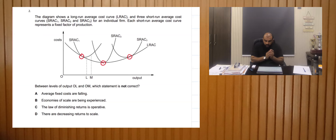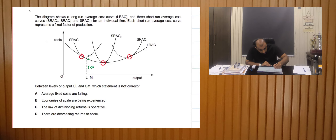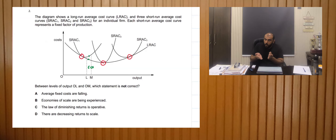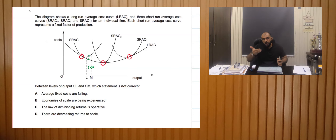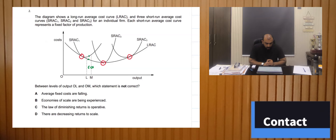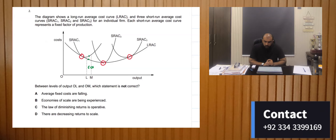Looking at the long-run average cost, this is economies of scale. Looking at the short-run graph, the short-run average cost is increasing, which shows diminishing returns. So both concepts are correct — long-run gives us economies of scale, short-run gives us diminishing returns, which is a short-run concept. Looking at the options: average costs are falling, and average fixed costs are falling.